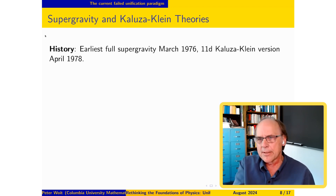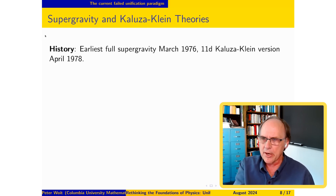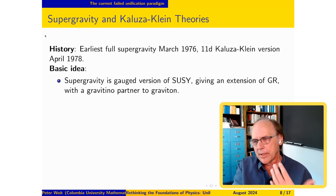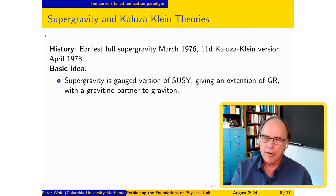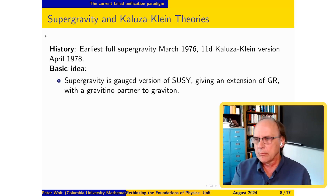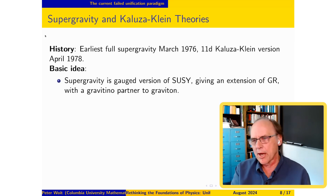Another part of the unification paradigm is supergravity and Kaluza-Klein, developed a few years after the standard model. Supergravity is basically supersymmetry turned into a gauge theory, giving an extension of general relativity. The gravitino is a partner to the graviton, and you have a theory which, when quantized, seems to have fewer renormalizability problems.